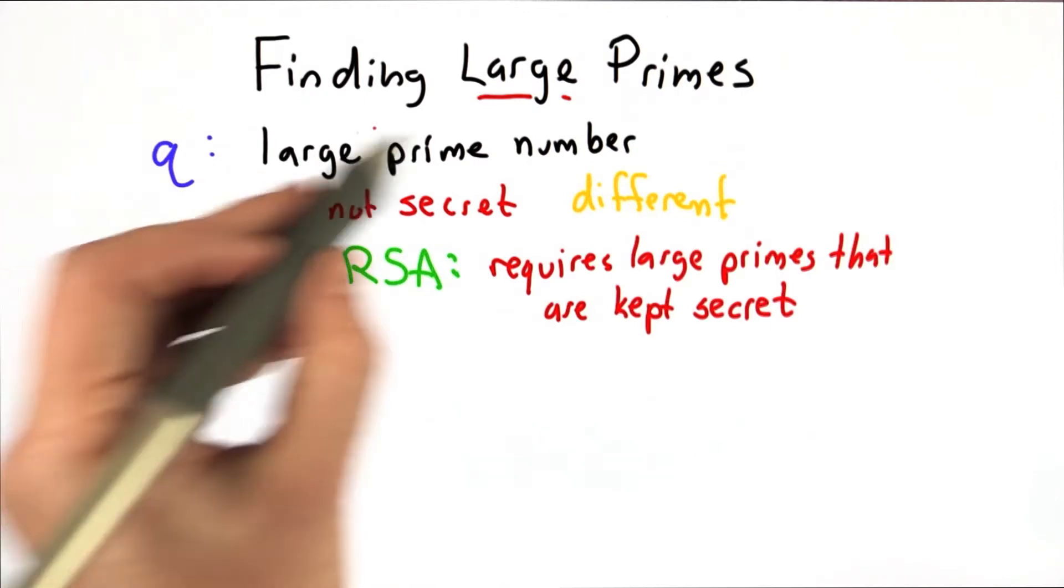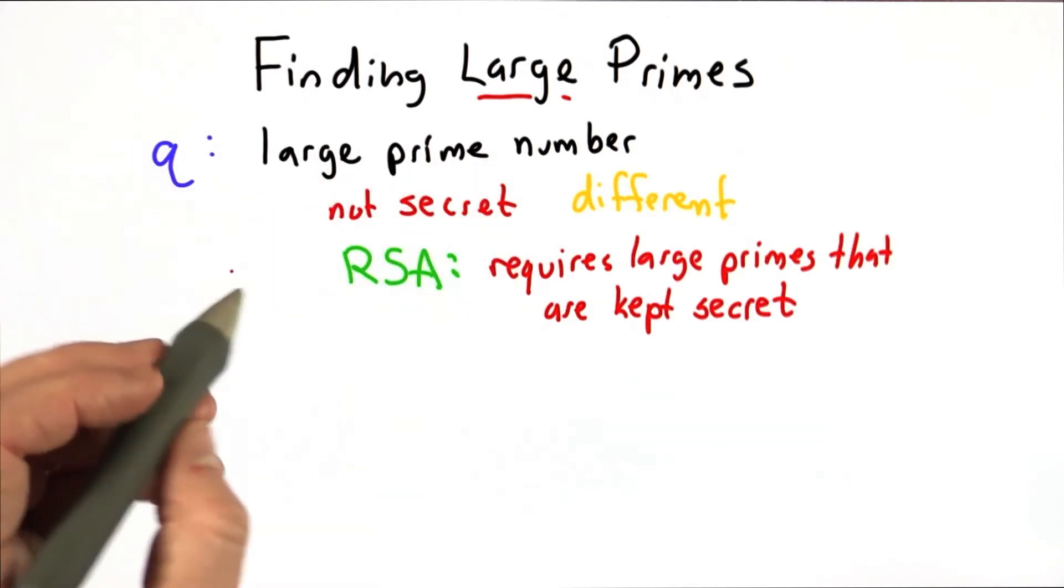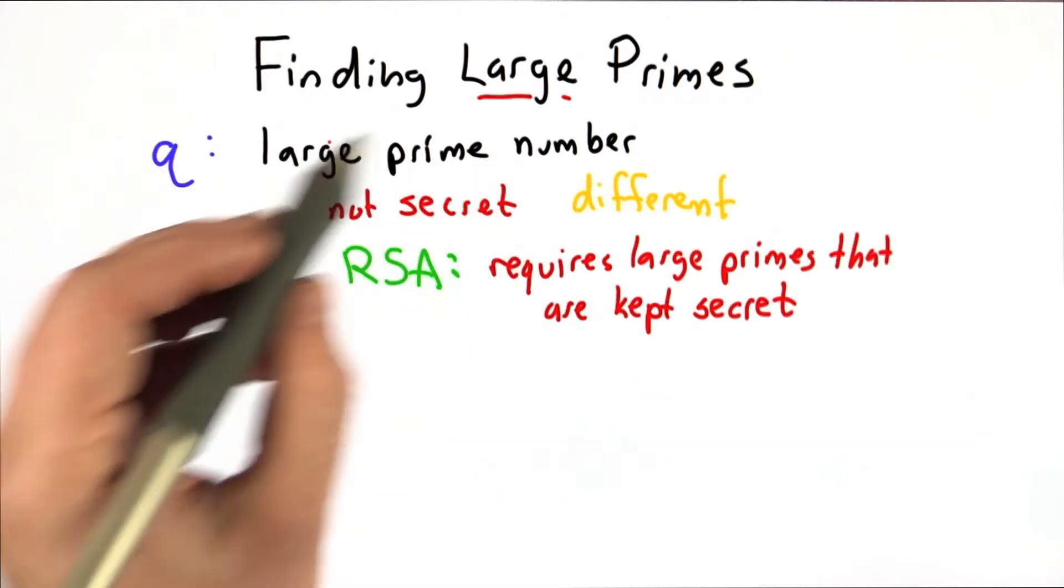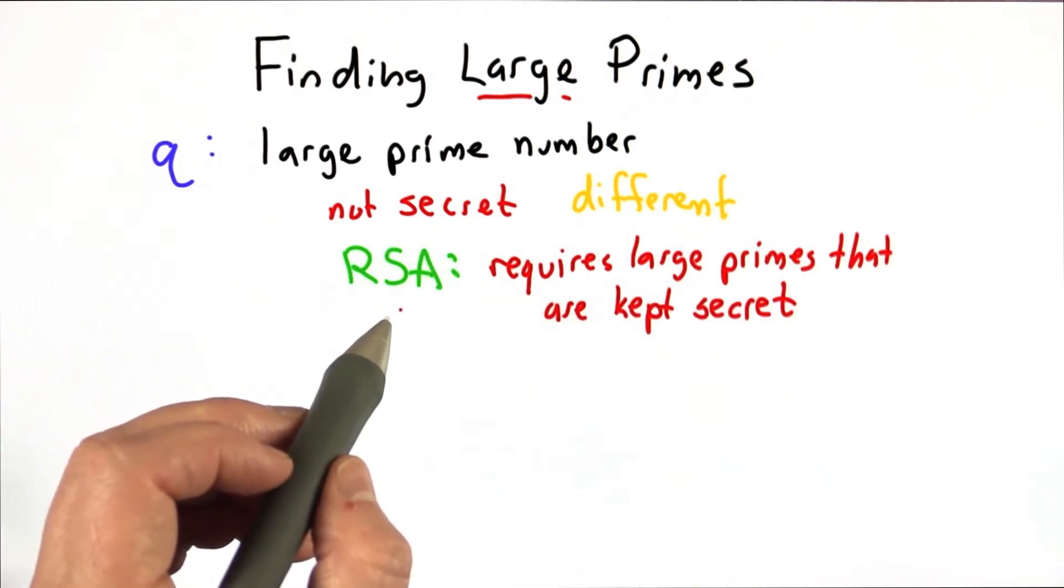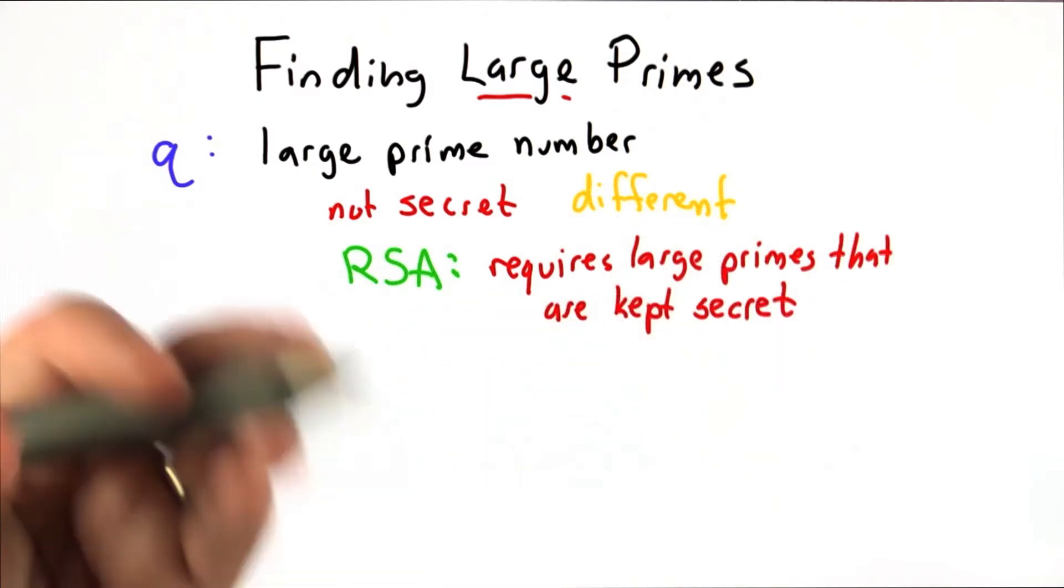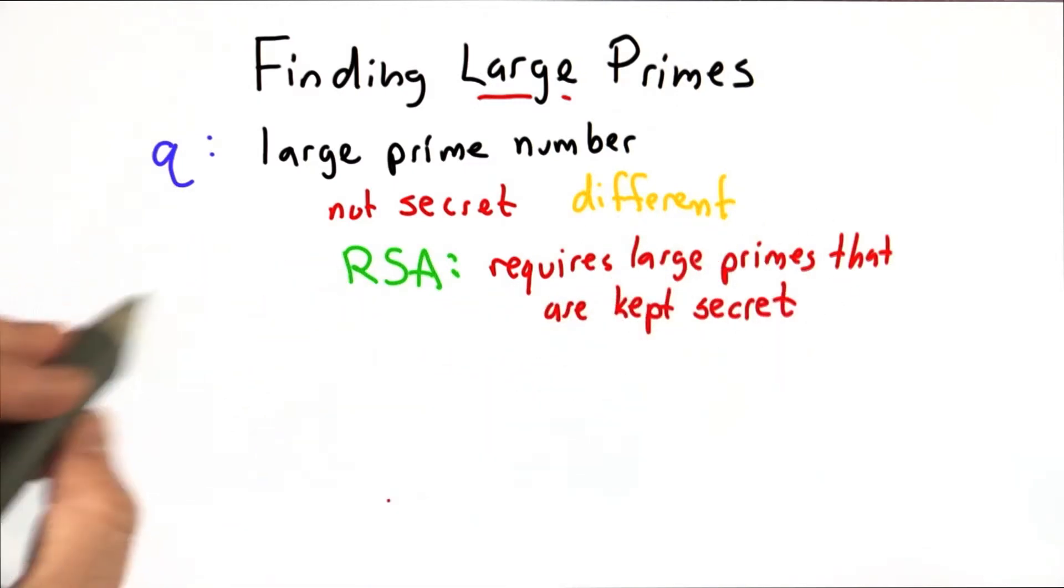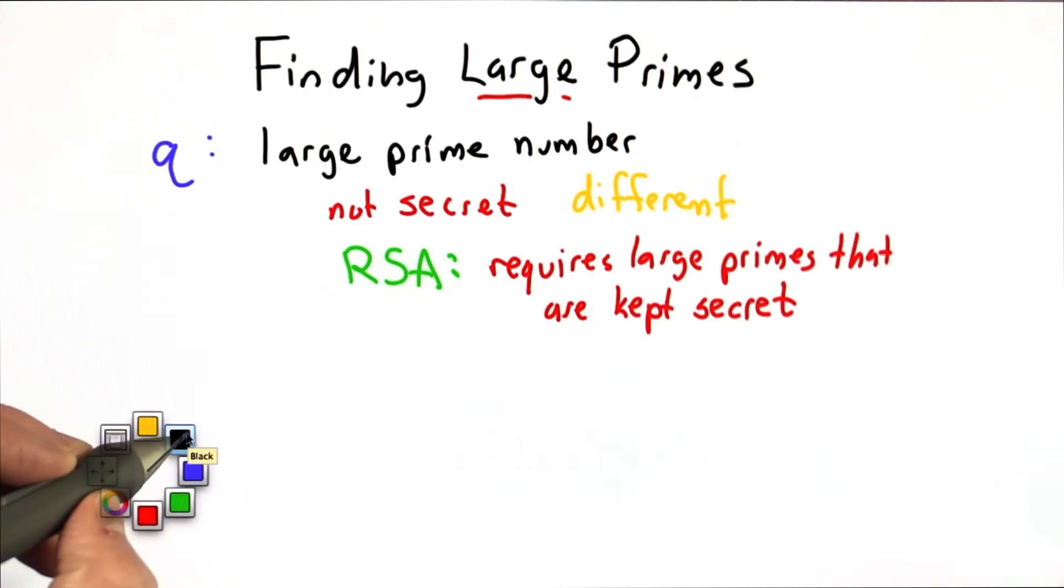For Diffie-Hellman, you might think, well, maybe we could have some large computing resource to do that. Not every participant needs to do this themselves. For RSA, which we'll talk about the next unit, every participant needs to generate their own prime numbers to be able to generate their own key. So we'll talk now about how to do that.